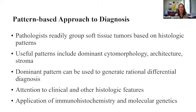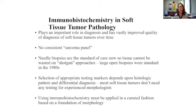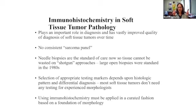Pathologists naturally group soft tissue tumors based on patterns — cytology, architecture, and the appearance of the stroma — to generate a rational differential diagnosis. We look at clinical and histologic features, then often enhance what we start out with by applying immunohistochemistry and molecular genetics. Immunohistochemistry is very, very important in soft tissue pathology; it really has vastly improved the quality of diagnosis over time.